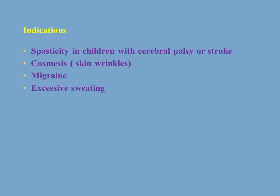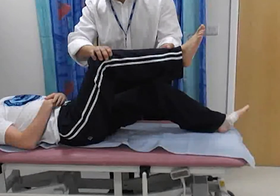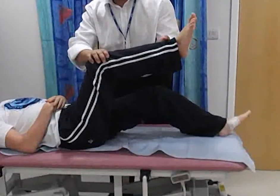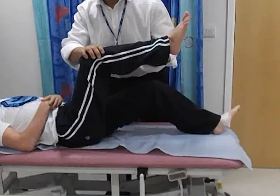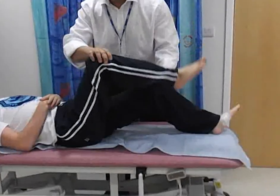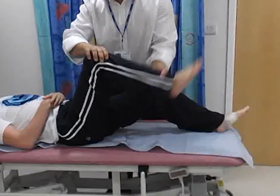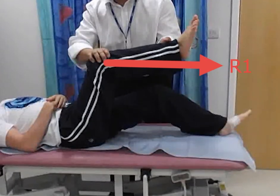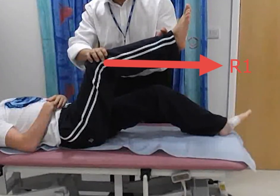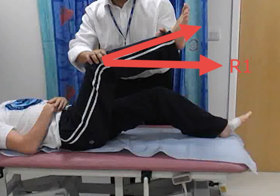To understand spasticity: spasticity is defined as speed-dependent hypertonia. Hypertonia can be measured by the difference between R1 and R2. R1 is the first catch — the first stop — for the limb during movement in the range of motion, while R2 is when it eventually stops and doesn't move anymore. The difference between R1 and R2 is the measure of spasticity in the limb.